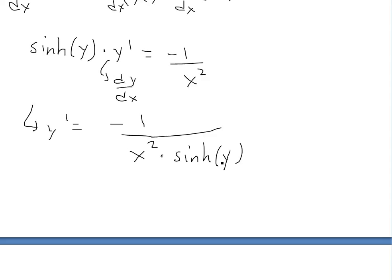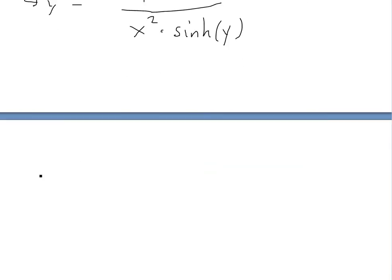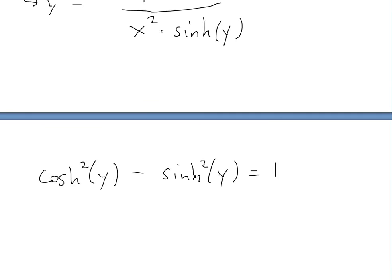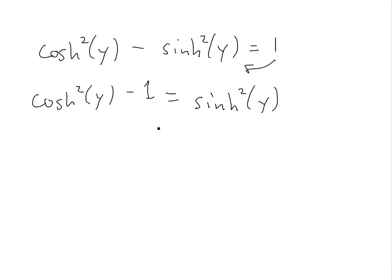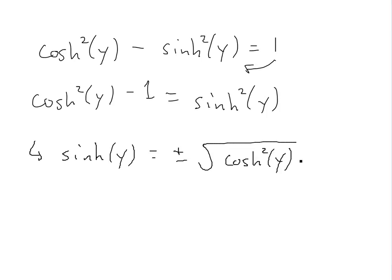Now we want to write this in terms of x. We use the hyperbolic identity: hyperbolic cosine squared minus hyperbolic sine squared equals 1. Solving for hyperbolic sine of y, we rearrange to get hyperbolic cosine squared of y minus 1 equals hyperbolic sine squared of y. Taking the square root of both sides gives hyperbolic sine of y equals plus or minus the square root of hyperbolic cosine squared of y minus 1.